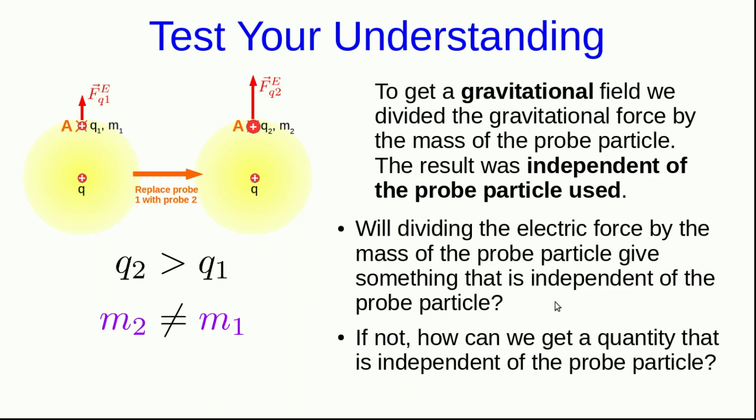Note that we are swapping between two probe particles to probe the field due to a source particle. And the answer will depend on the source particle, but will not depend on the probe particle. You are going to reason out how we get the electric field. But the reasoning shouldn't be too hard if you just apply the idea we've seen. So to get a gravitational field, we saw that we divided the gravitational force by the mass of the probe particle. And we got a result that was independent of the probe particle used. So first think about whether dividing the electric force by the mass of the probe particle will give something that's independent of the probe particle. And if not, how can we get a quantity that is independent of the probe particle? I'll tell you that you know how to calculate the force that Q exerts on each of these probe particles. It's Coulomb's law. And so all you have to do is look at Coulomb's law and see what part we have to remove to get an expression that's independent of the probe particle.